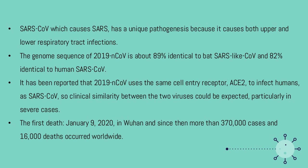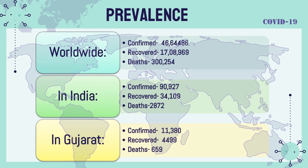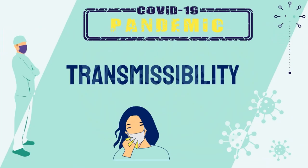It has been reported that 2019-nCoV uses the same cell entry receptor to infect humans as SARS-CoV, so clinical similarity between the two viruses could be expected, particularly in severe cases. The first death occurred on January 9, 2020 in Wuhan, and since then more than 370,000 cases and 16,000 deaths occurred worldwide. Prevalence data: confirmed 46,64,486, recovered 17,08,969, deaths 300,254 worldwide; confirmed 90,927, recovered 34,109, deaths 2,872 in India; confirmed 11,387, recovered 4,499, deaths 659 in Gujarat.